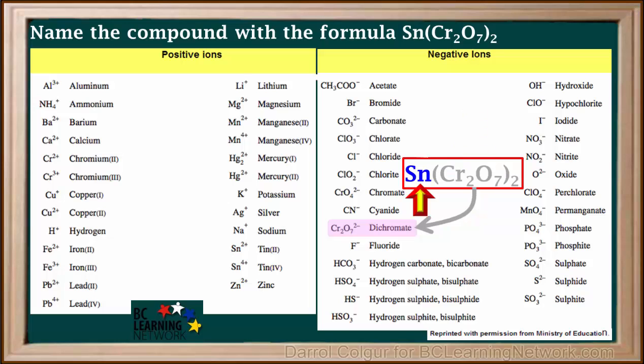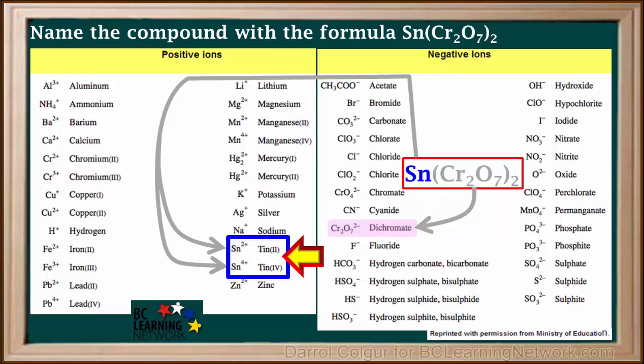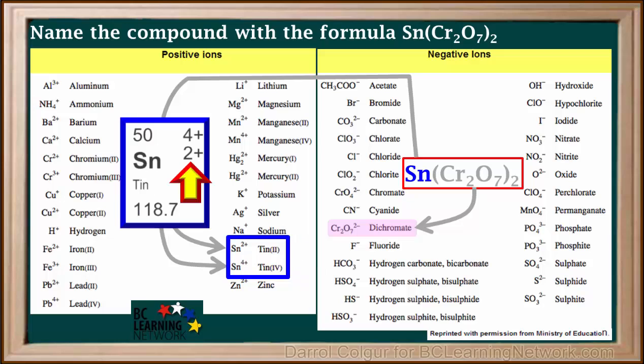And the metal Sn is found on the positive ion section of this table. We see that Sn is tin and it is a multivalent metal. It can have a charge of either positive 2 or positive 4. This is verified by finding tin on the periodic table. We see it has these two different possible charges.